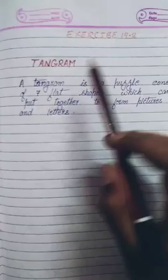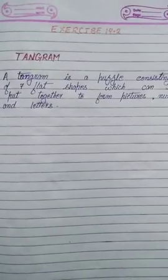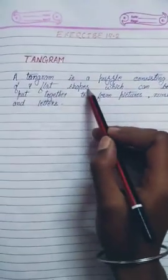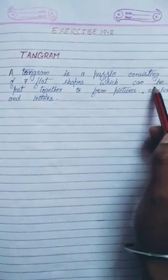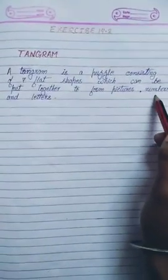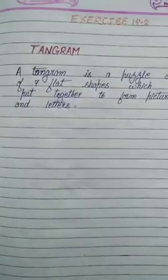Now exercise 14.2. Tangram. Children, what is tangram? A tangram is a puzzle consisting of 7 flat shapes. Tangrams which can be put together to form pictures, numbers and letters. Tangram is a kind of puzzle. Let's learn how to make tangram.